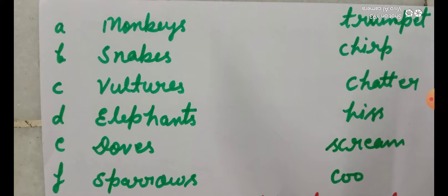So, monkeys, snakes, vultures, elephants, doves and sparrows and sounds are trumpet, chirp, chatter, hiss, scream and coo.